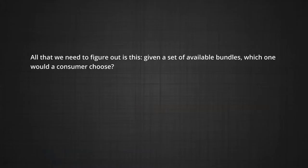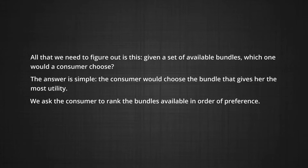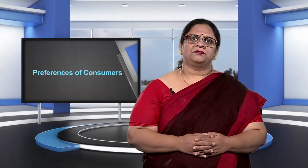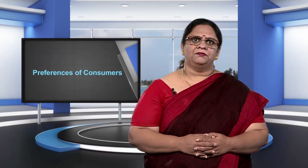In fact, we don't need to measure utility to analyze consumers' behavior. All that we need to figure out is this: given a set of available bundles, which one would the consumer choose? And the answer is simple — the consumer will choose the bundle that gives her the maximum utility. How do we know which bundle gives the consumer the most utility? We ask the consumer to rank all the available bundles in order of preference.